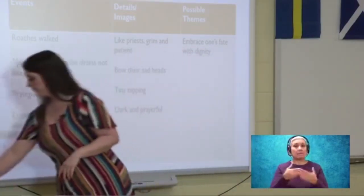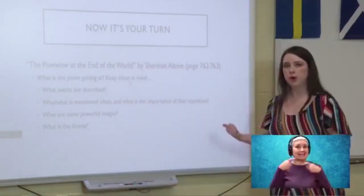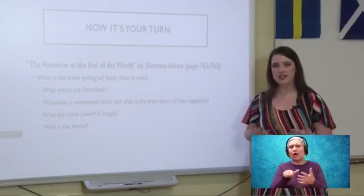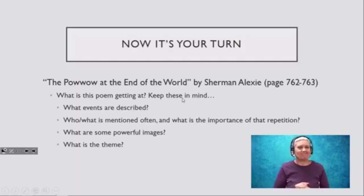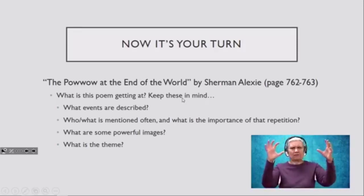All right. So before we close, I want to give you some tips on how to approach the rest of your texts that are due this week. You have three poems all dealing with the end of the world. That's your central idea. They're talking about the end of the world, but they're talking about it in a very different way. Each poet is approaching this topic in a different way. So I want you to keep this in mind. What events are being described? Who or what is mentioned often? And what is the importance of that repetition? The Pow Wow at the End of the World by Sherman Alexie, he mentions several words and phrasing often. Why? He does that on purpose. So what is it that he wants us to get through that? What are some powerful images? And then come up with what is that lesson learned?